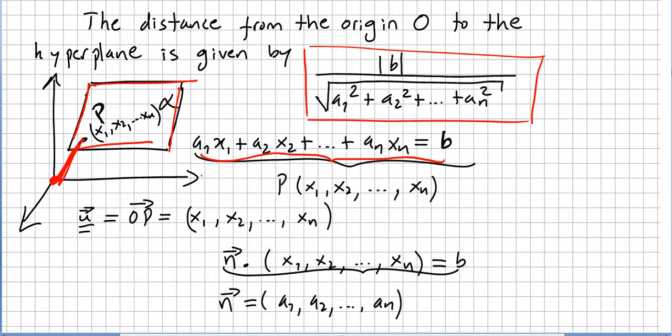We have seen in the previous video that the normal to the plane will be a vector with components a1, a2, an. This will be the normal vector, the normal to the plane, so a vector that is orthogonal to all vectors that lie in the hyperplane.